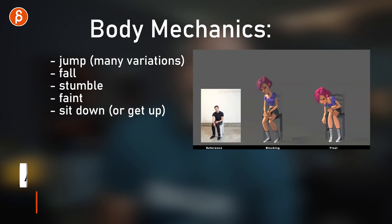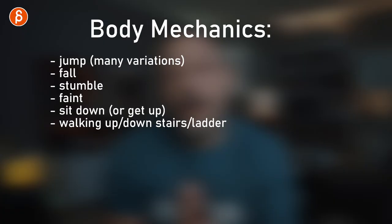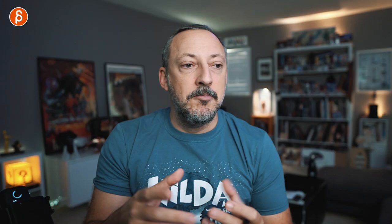Another exercise I love giving to students is the sit-down assignment — sitting down onto a chair and getting out of it. You practice weight and can start adding character through how someone sits: are they tired, happy, exhausted? To make it more complicated, walk up or down stairs, or a ladder — different mechanics of stepping and holding on. You can expand that into climbing over something organic and unevenly shaped, which changes your posing and adds asymmetry.